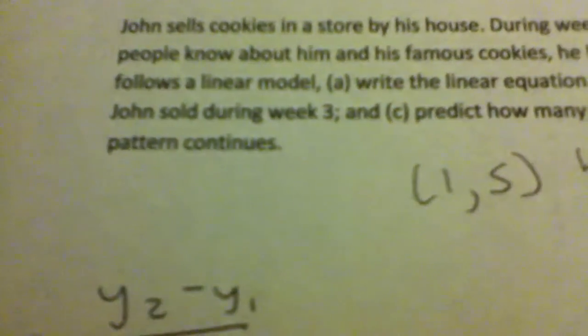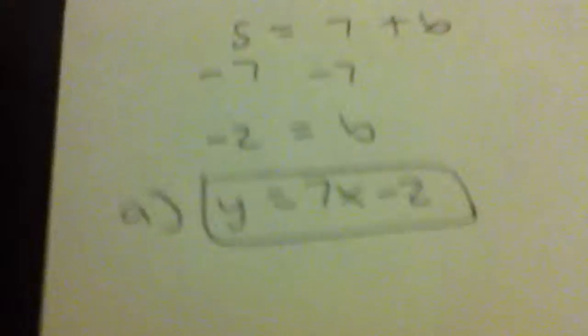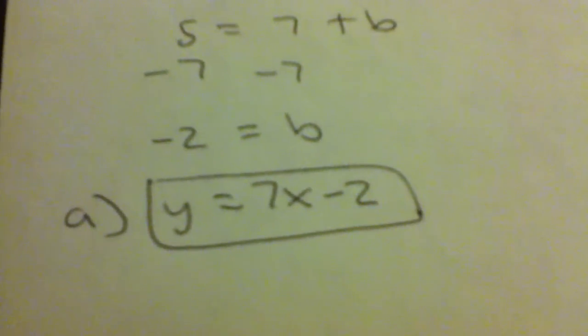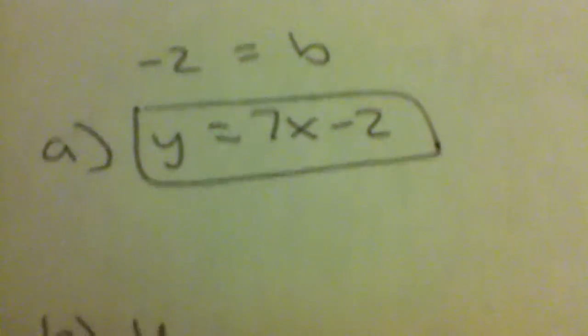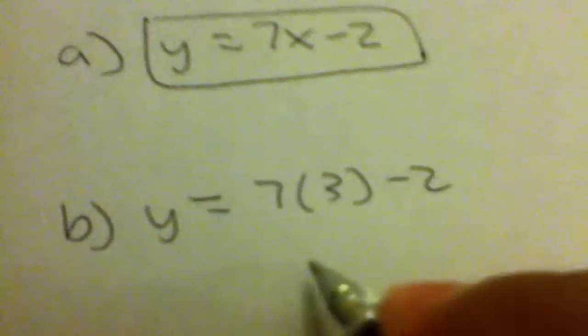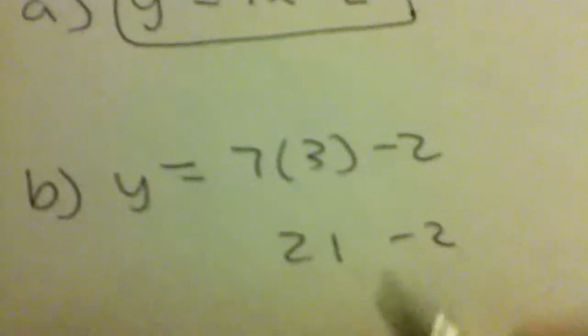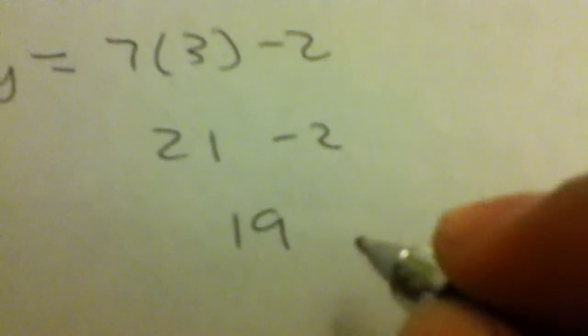Now we have to do part B, which says calculate how many cookies John sold during week 3. Basically, all that means is we have to plug 3 into where x equals to get our y output. y equals 7 times 3 minus 2. 7 times 3 is 21, and 21 minus 2 is 19. So during week 3, John sold 19 cookies.